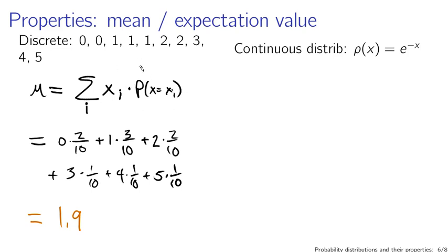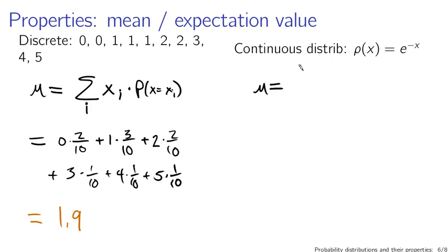In the context of a continuous distribution, the mean mu — now instead of a sum, we have an integral. Instead of a sum over all possible values, we have an integral over all possible values from minus infinity to infinity of x times the probability density rho of x dx.